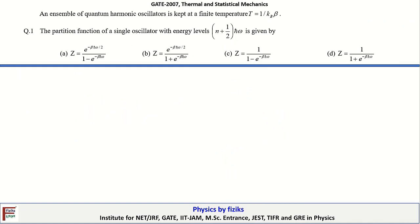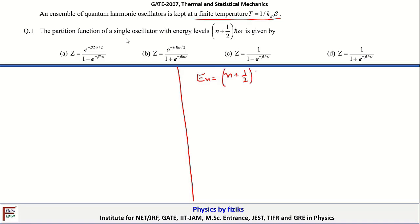Let's continue with the next problem. The statement concerns an ensemble of quantum harmonic oscillators. The energy levels are given as E_n equals (N + 1/2) h-bar omega, where N takes values 0, 1, 2, 3, and so on.